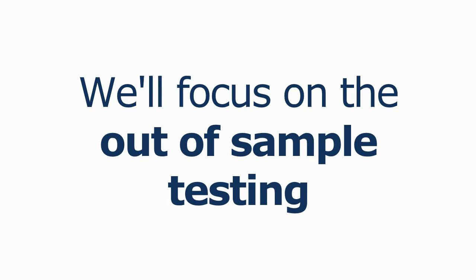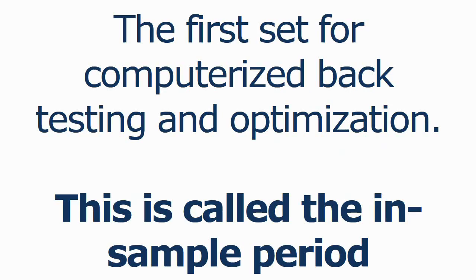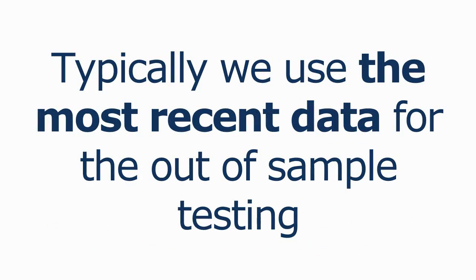Of course you can apply all three of them to your strategy, but right now we're going to focus on out of sample testing. In out of sample testing, we separate the available historical test data into two sets. The first set we're going to use for the computerized backtesting and the optimization — this is called the in sample period. The optimized test results are then applied to the remaining untested data set, referred to as the out of sample period.